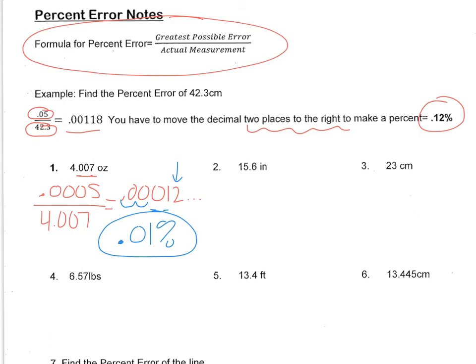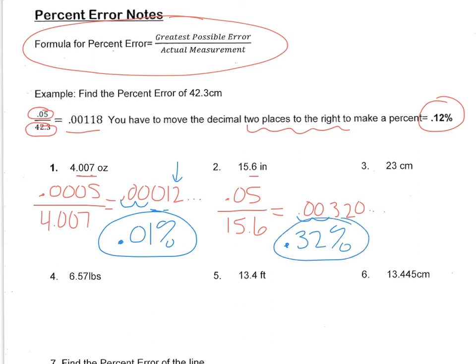Let's do another one. The greatest possible error is going to be 0.05, because there was one number after the decimal, so we put one zero and then a five. And we're going to divide that by the actual measurement. So 0.05 divided by 15.6 gives us 0.00320, and then it keeps going. So now we need to change this to a percentage by moving the decimal two places to the right. So our percentage is 0.32% error.